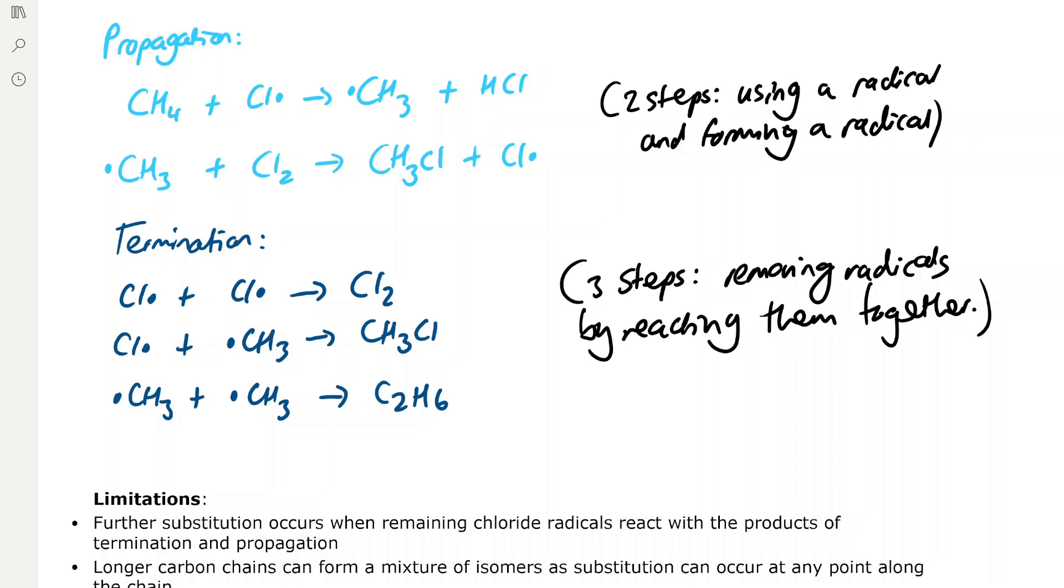For example, chlorine radicals react to form chlorine, chlorine radicals react with CH3 radicals to form chloromethane, and CH3 radicals can react together to form ethane.